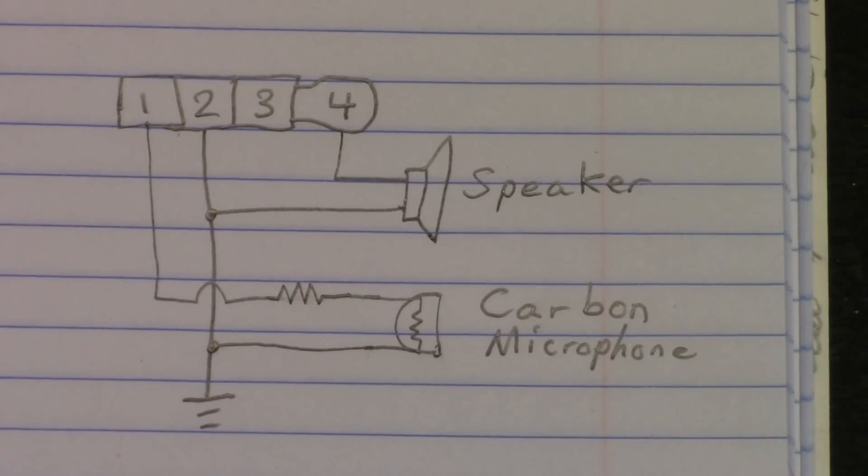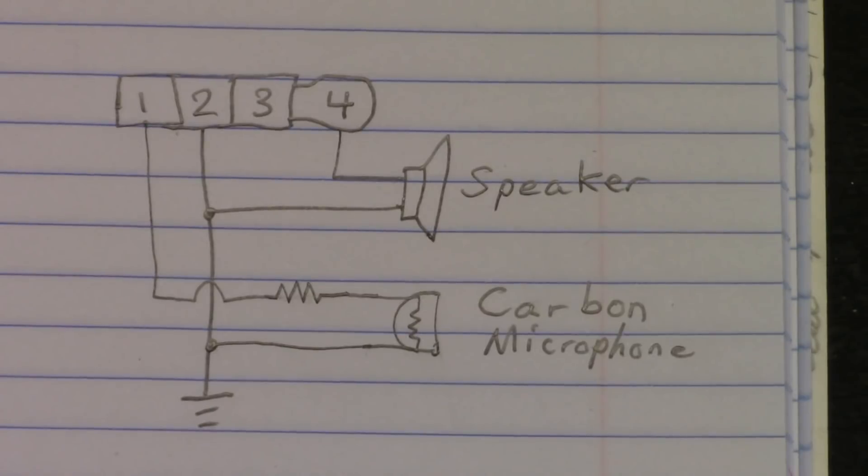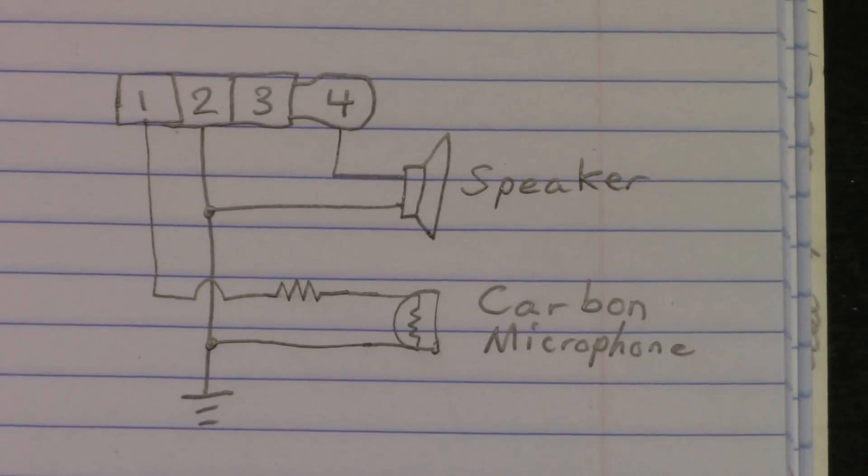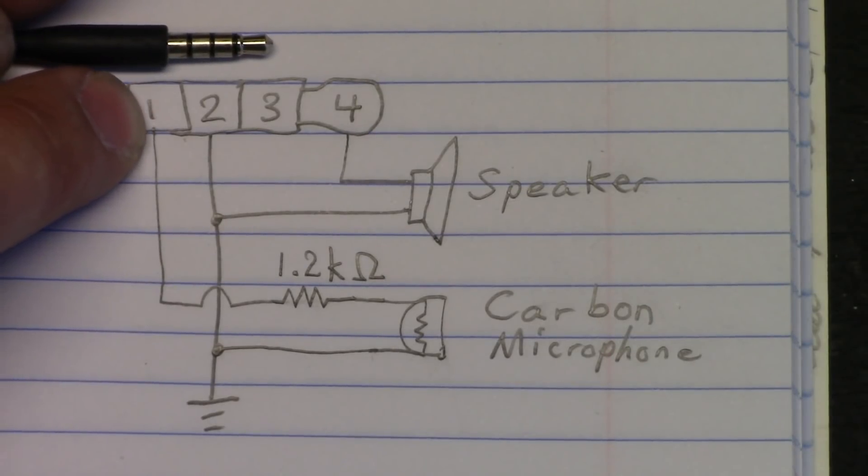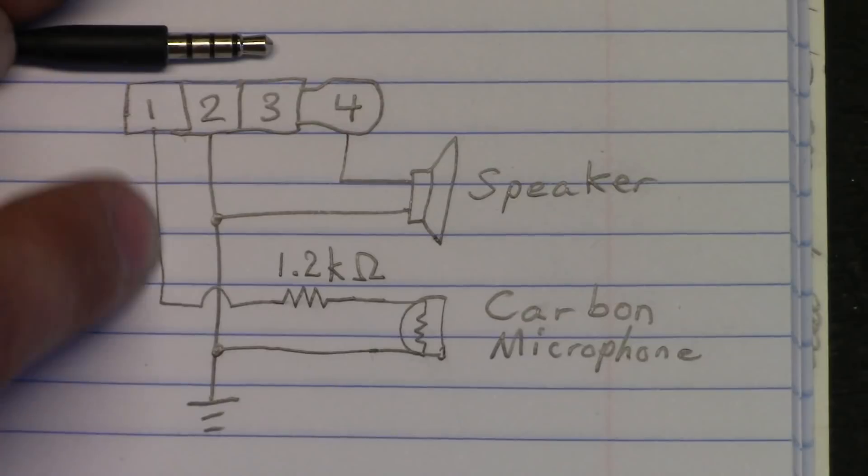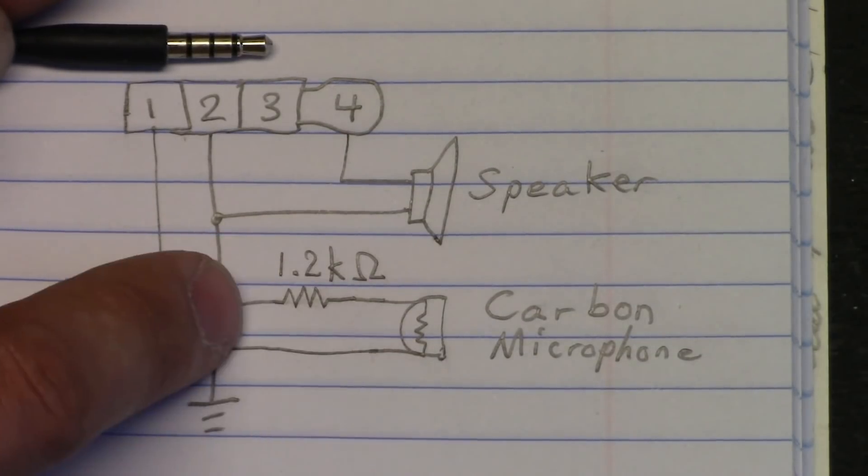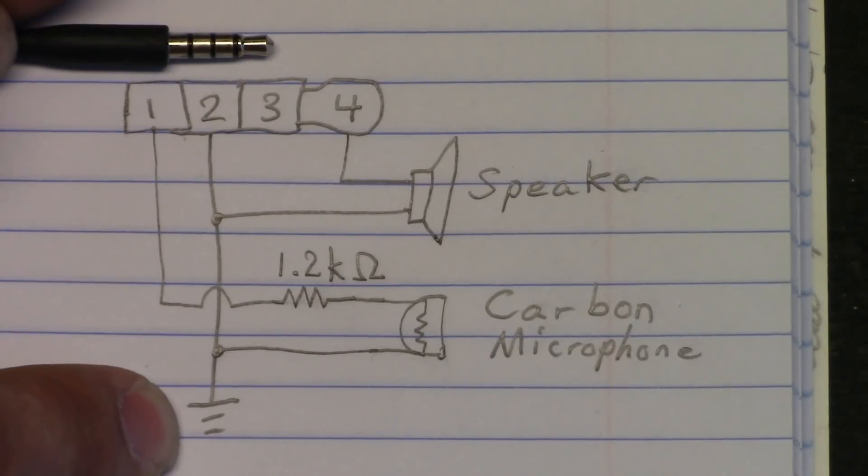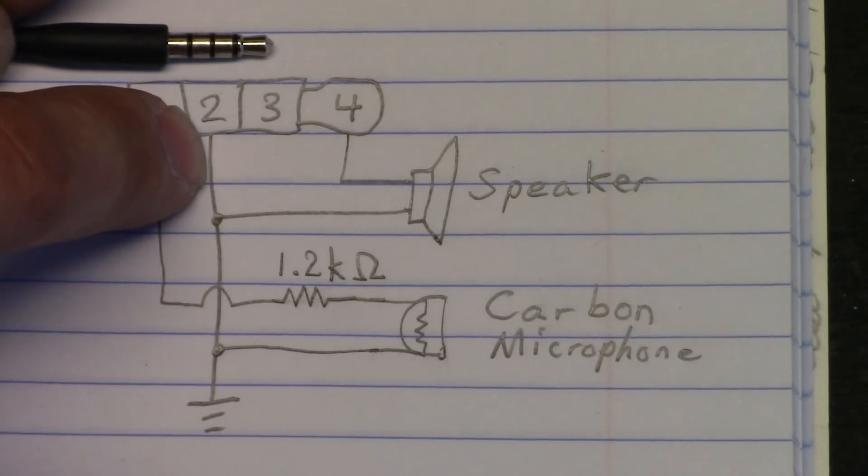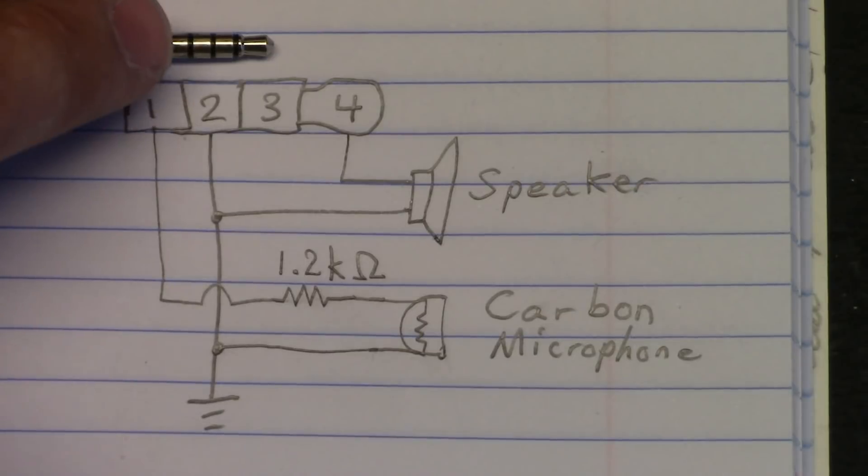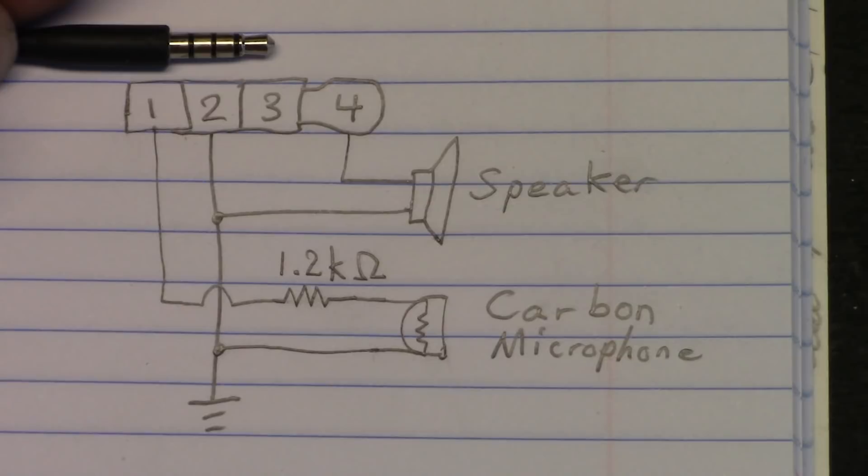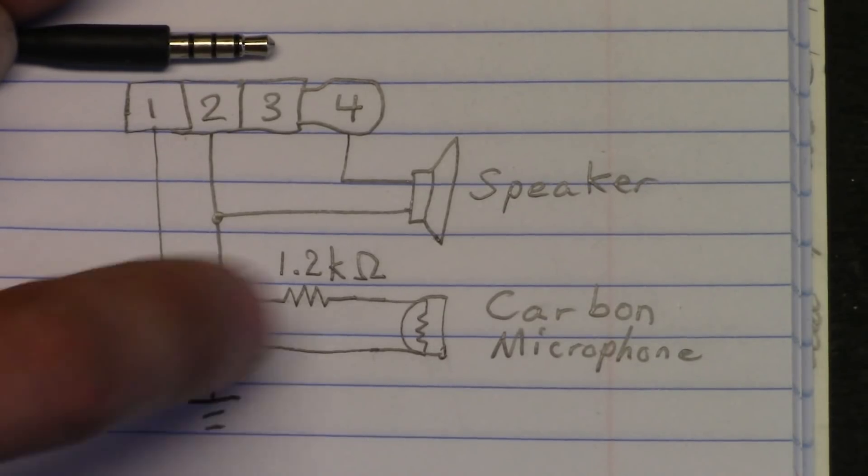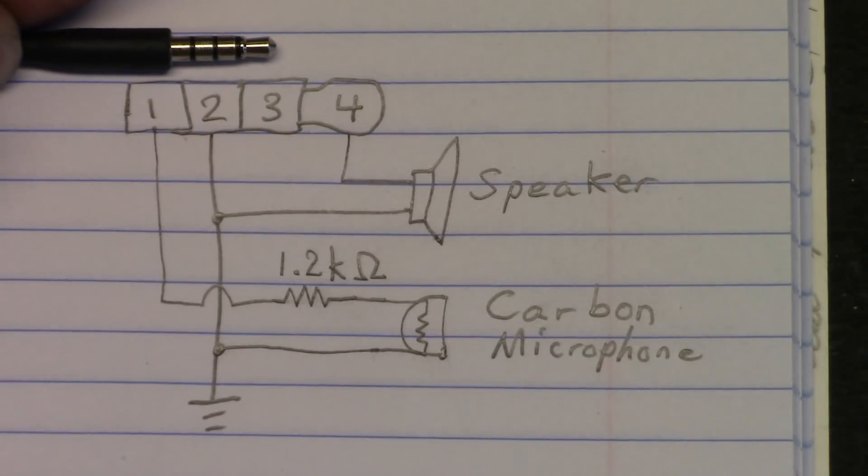Here is a schematic diagram of the simple setup. I forgot something. This corresponds to the jack like this. First connection, microphone, simply goes through the 1.2 kilohm resistor, through the microphone, and to common ground connection, which is the ground connection of pin 2. Also, pin 2, the common ground, goes to one side of the speaker of the handset. The other side of the speaker goes to pin 4, which is the left channel. And it's that simple.